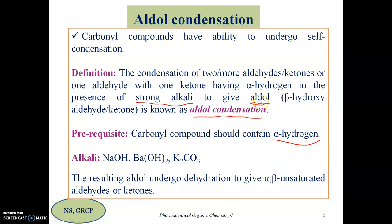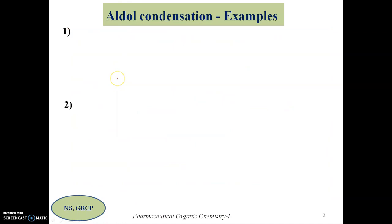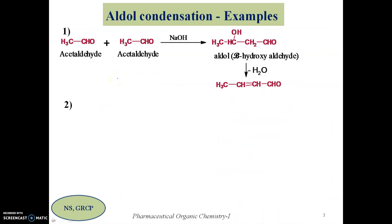The resulting aldol is a beta hydroxy compound, similar to an alcohol. Since alcohols can undergo dehydration, the aldol will also undergo dehydration to give the corresponding alpha beta unsaturated aldehyde or ketone. Now let us see a few examples for aldol condensation.